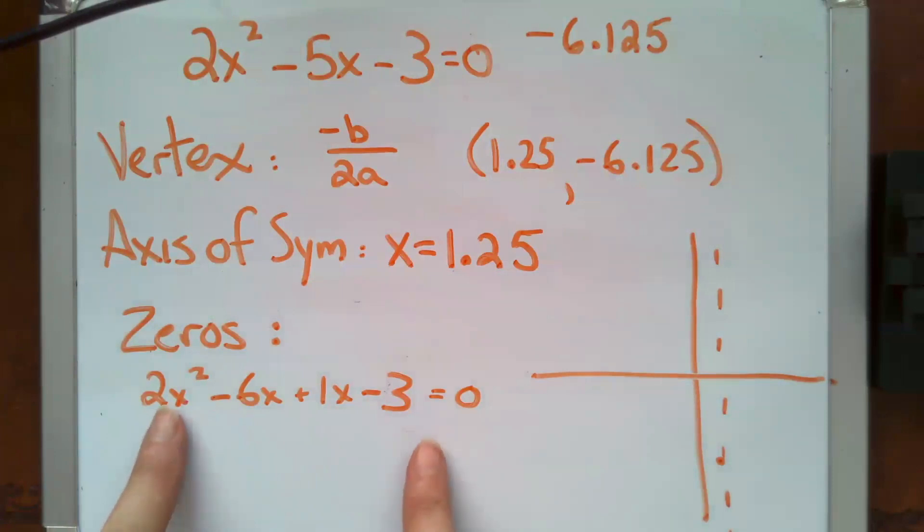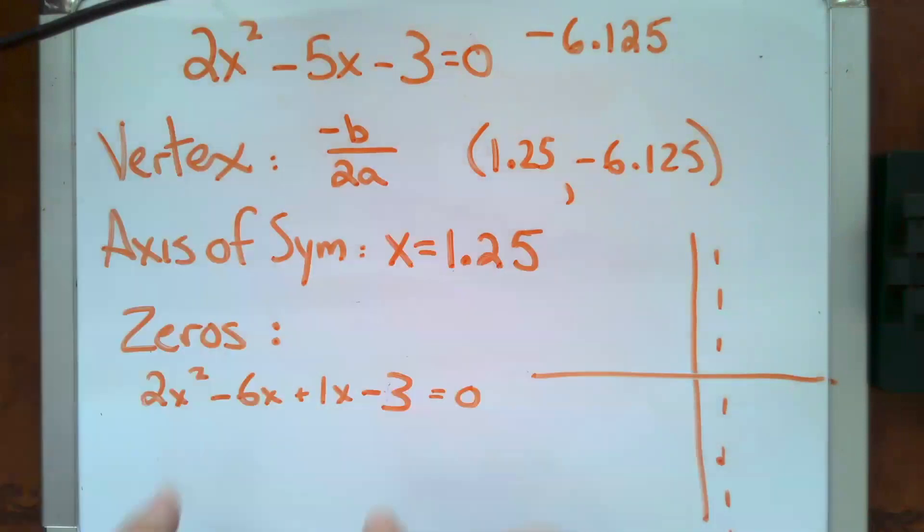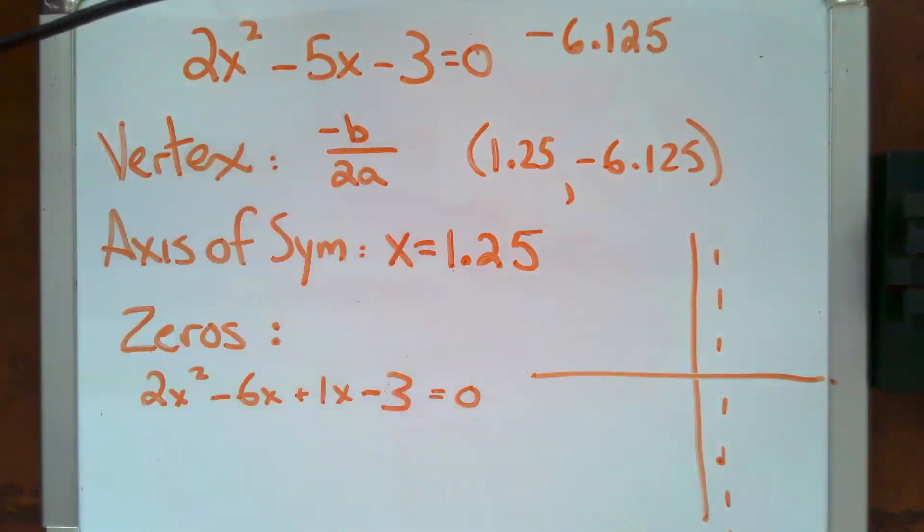And so what I've done is I've grabbed my first and my last from my original equation, and then I've taken the two answers from my factoring using the x method, and those are the coefficients of my outer and inner, right? I see that when I put those together, I get my middle term there. And now I'm going to finish up with some quick factoring by grouping. So that would look like this.